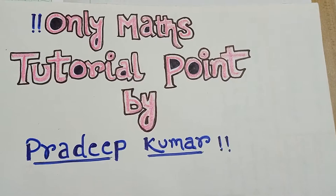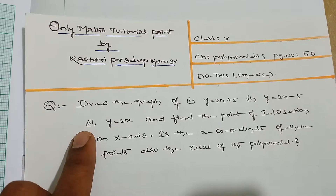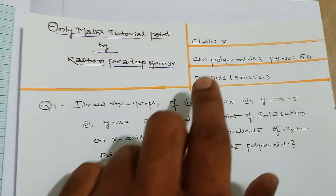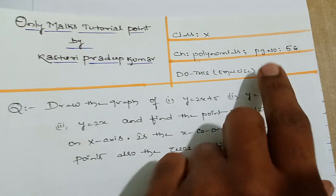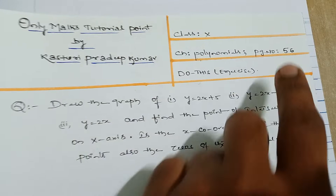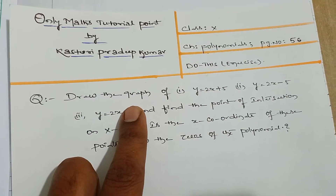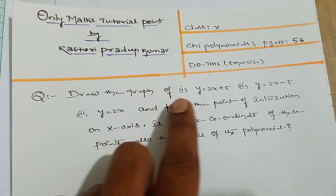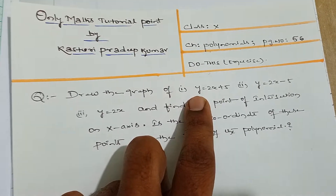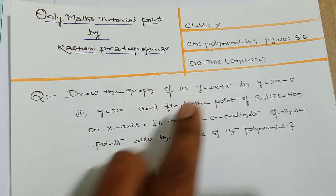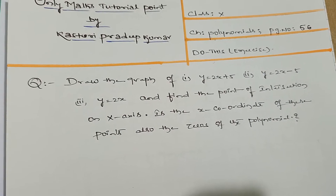Hi guys, welcome to Only Math Tutorial Point. Today we are going to discuss Chapter Polynomials and do the exercise on page number 56 on graphs — specifically how a polynomial can be drawn on a graph paper.